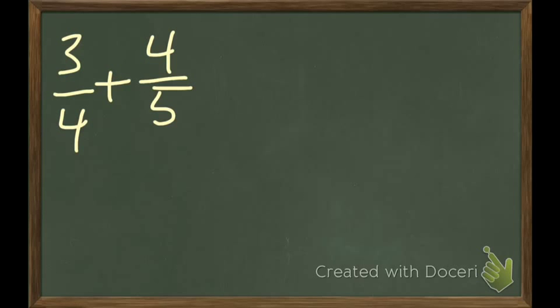So let's try this. If I want to add three fourths and four fifths, the problem is that the four and the five are different. Joey, how would you solve that problem?